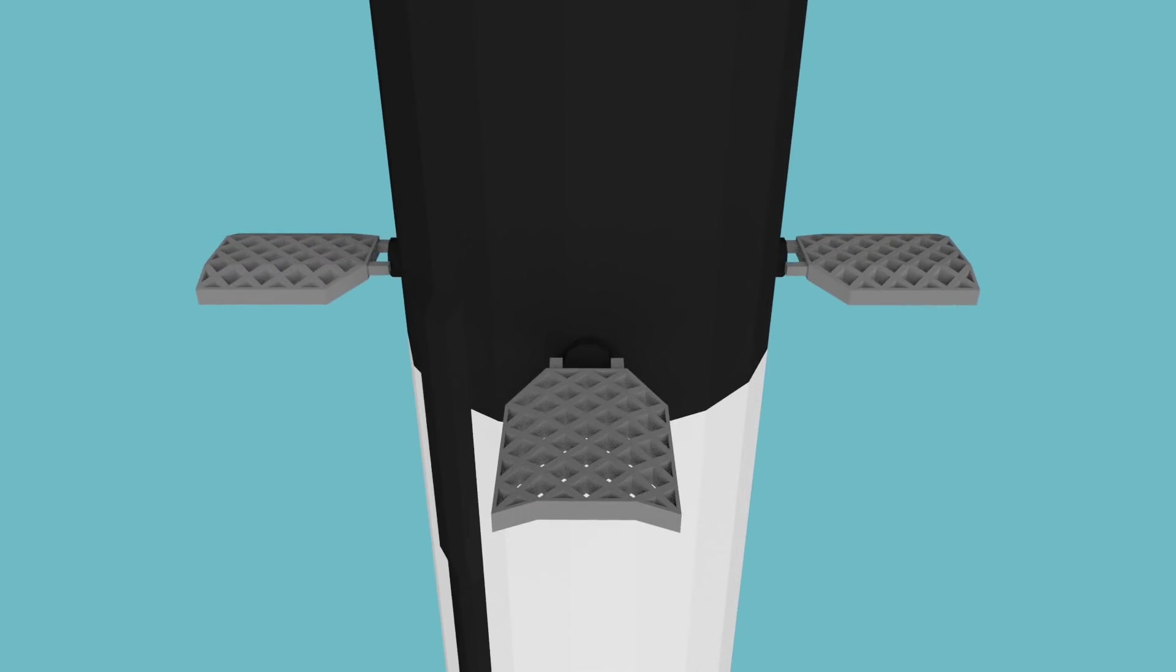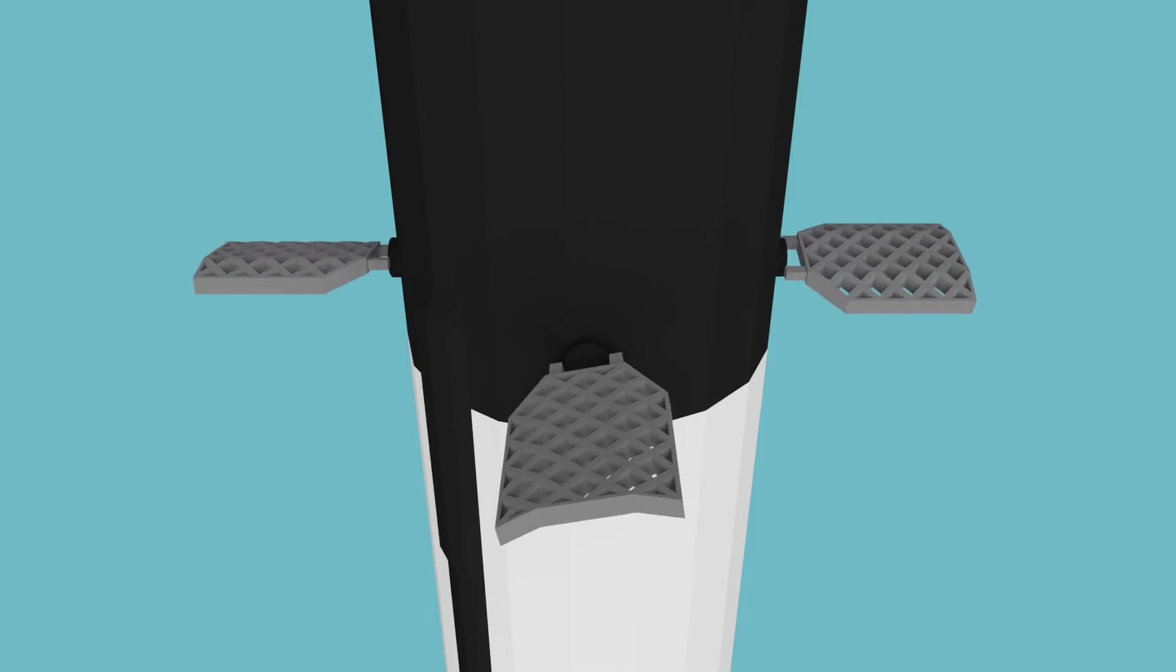They're called grid fins. Some of you are probably quite familiar with them. They can rotate like this, which allows us to push the top of the rocket around.